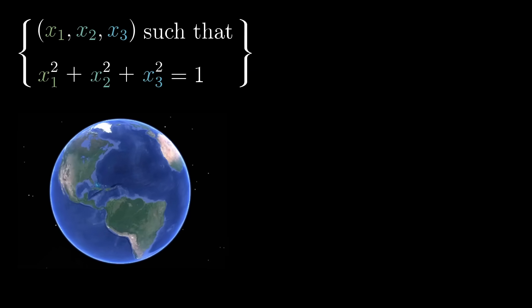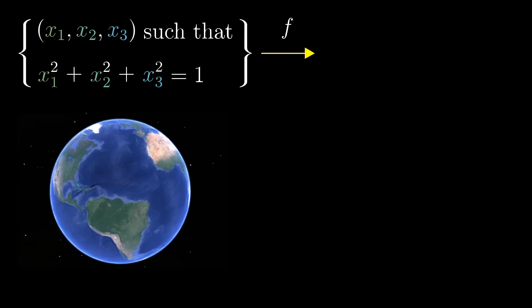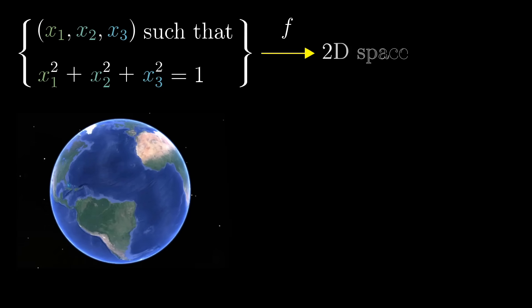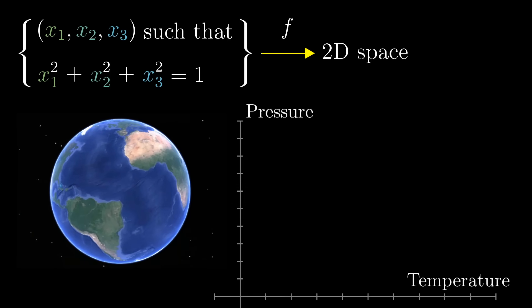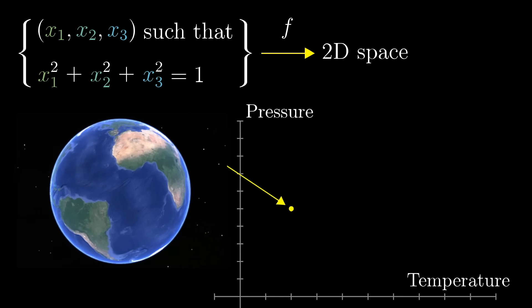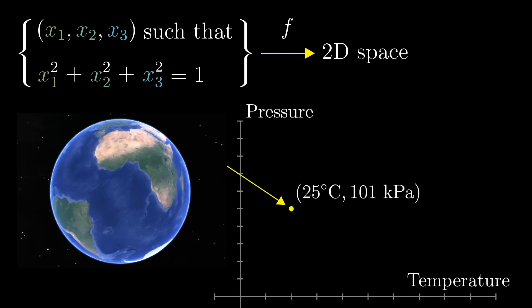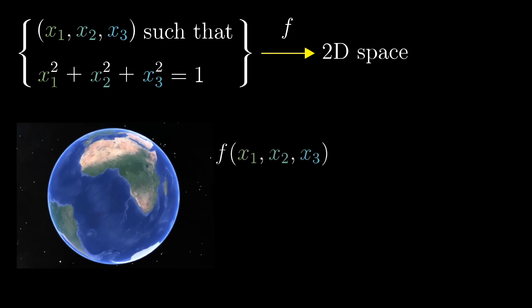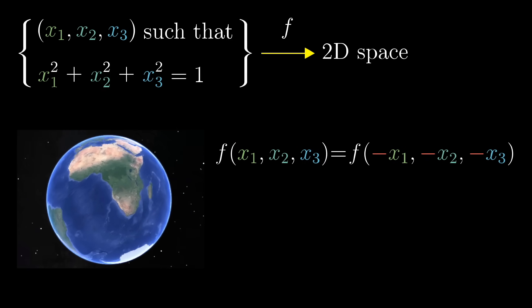For any function that takes in points on the sphere, triplets of numbers whose squares sum to 1, and spits out some point in 2D space, some pair of coordinates like temperature and pressure, as long as the function is continuous, there will be some input so that flipping all of its signs doesn't change the output.